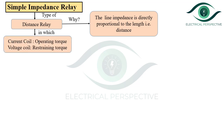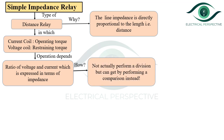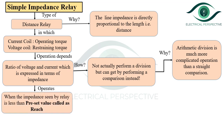The current coil provides the operating torque and the voltage coil provides the restraining torque, and its operation depends on the ratio of voltage and current, which is expressed in terms of impedance. To compute the impedance, there is no need to perform the actual division of V by I; we can get it by performing a comparison instead, because arithmetic division is a much more complicated operation than a straight comparison. The simple impedance relay operates when the impedance seen by the relay is less than the preset value called the reach.